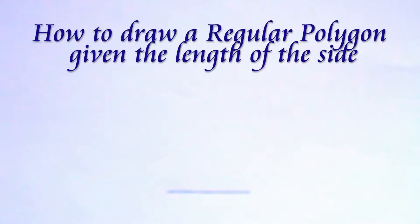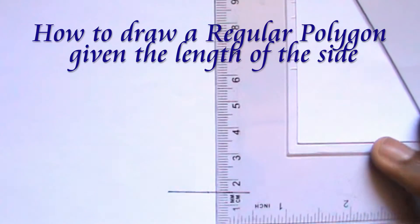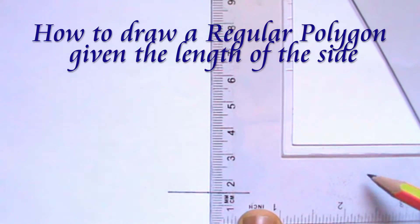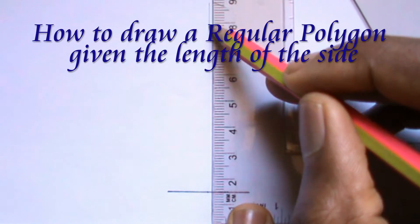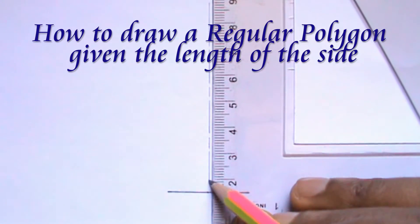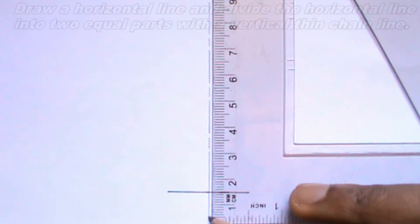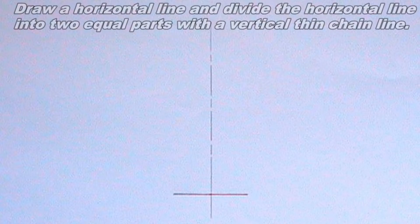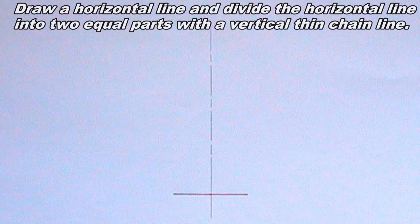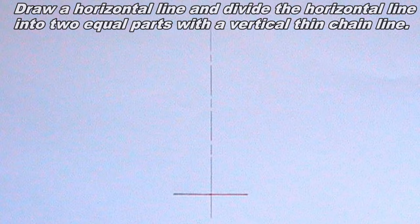Welcome to iTech tutorial. To draw any regular polygon given the length of the side, the first step is to draw a horizontal line and divide it into two equal parts with a vertical thin chain line.